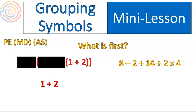Let's look at one more question and try to figure out what we would do first. There are no grouping symbols on this one — it's just straight multiplication, division, addition, and subtraction. I know I do my multiplication/division before my addition/subtraction, so I'm not going to do 8 minus 2 or 2 plus 14 first. I'm going to either do 14 divided by 2 or 2 times 4. Starting at the left and moving to the right, the first one I come to is 14 divided by 2 — that will be my first step.